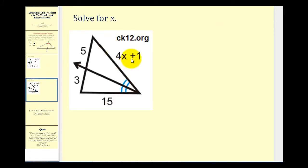Here we want to solve for the value of X given that this ray bisects this angle of the triangle. So it divides this opposite side so that it's proportional to the other two sides of the triangle. So in order to solve for X, our proportion would be 5 is to 3 as 4X plus 1 is to 15.